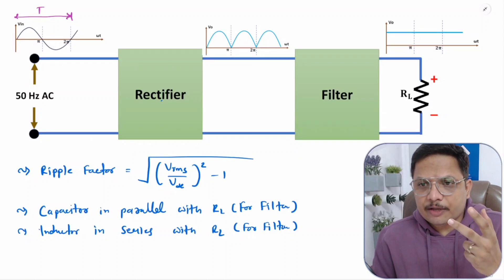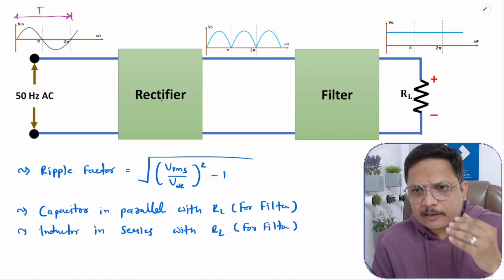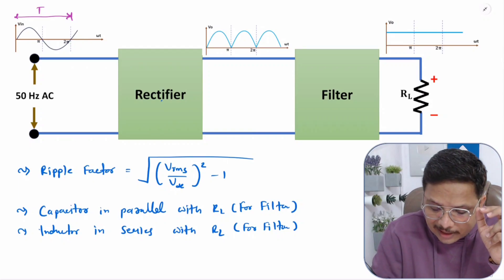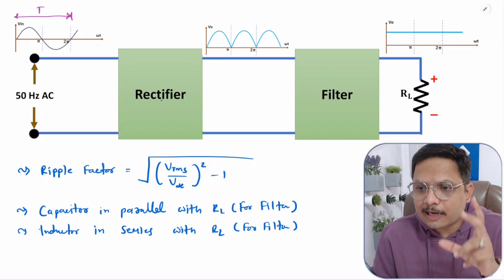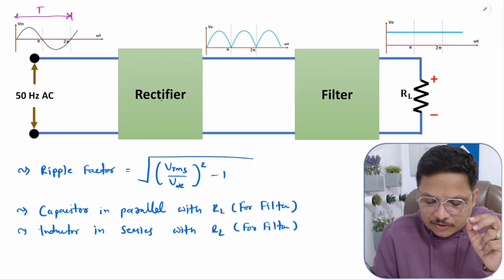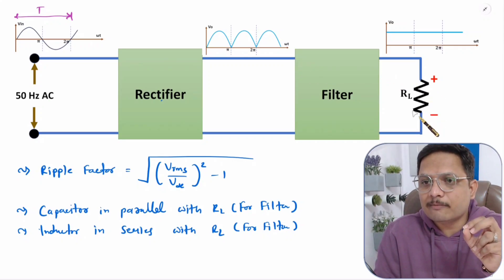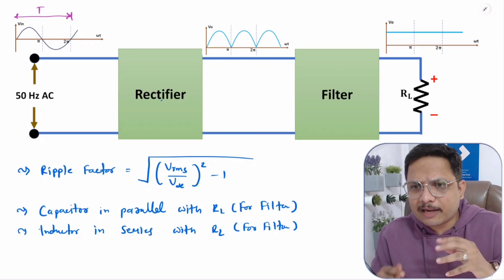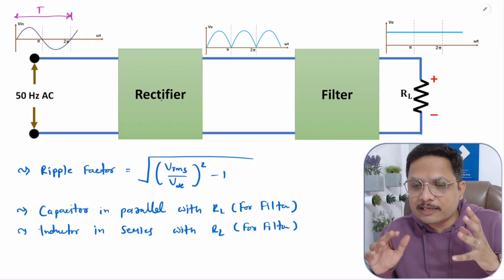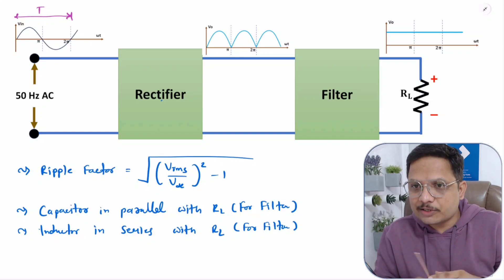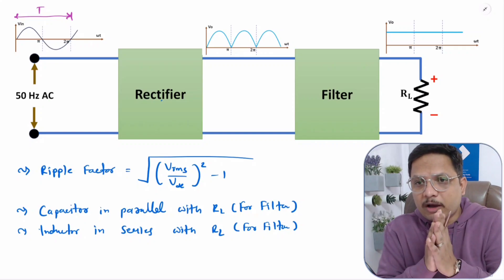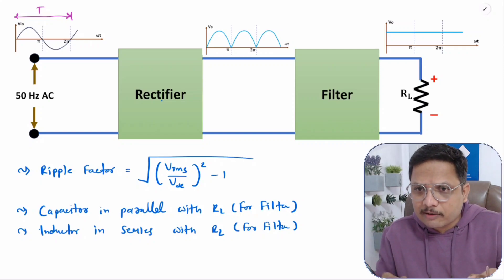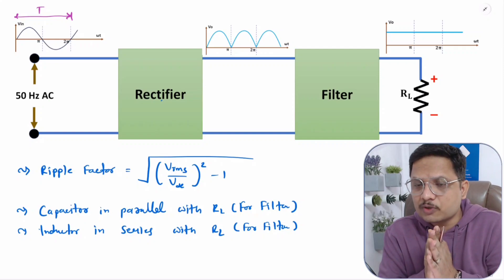There are different types of filters available for rectifiers: a capacitor filter (capacitor in parallel), an inductor filter (inductor in series with RL), and a pi filter, among others. I'll show each filter type along with calculations in the next coming videos. I hope you understood this video; if you have anything to share please note it in the comment section. Thank you so much for watching.